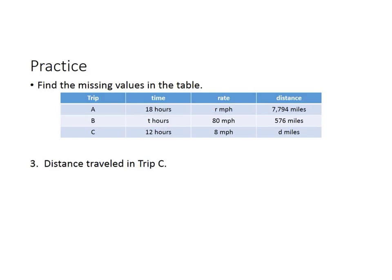In this one, you're going to solve for the distance traveled in trip C. You know they drove for 12 hours, you know they went 8 miles per hour. Oh, I hope that was on a bike. How far did they get?